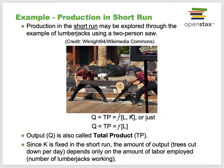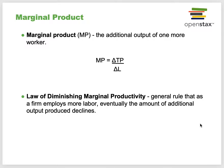Production in the short run can be explored through the example of lumberjacks using a two-person saw. The output—called total product—is a function of labor. Since capital K is fixed in the short run, the amount of output—trees cut down in a day—depends on the amount of labor employed, the number of lumberjacks working. Marginal product is the additional output of one more worker: the change in total production divided by the change in labor.